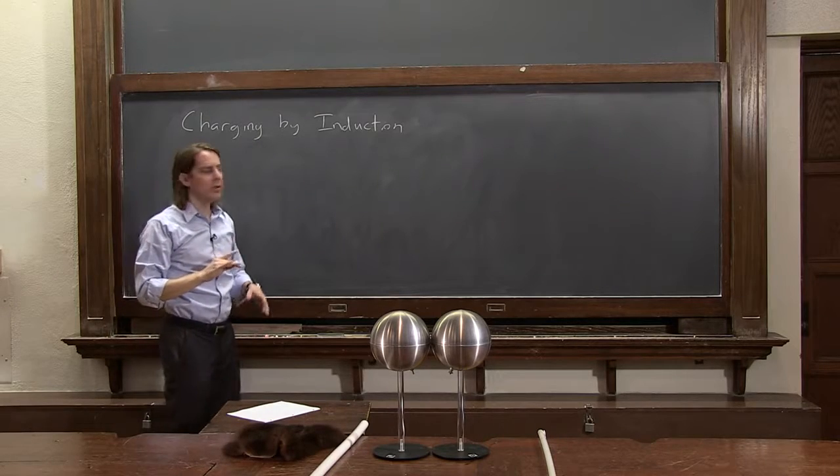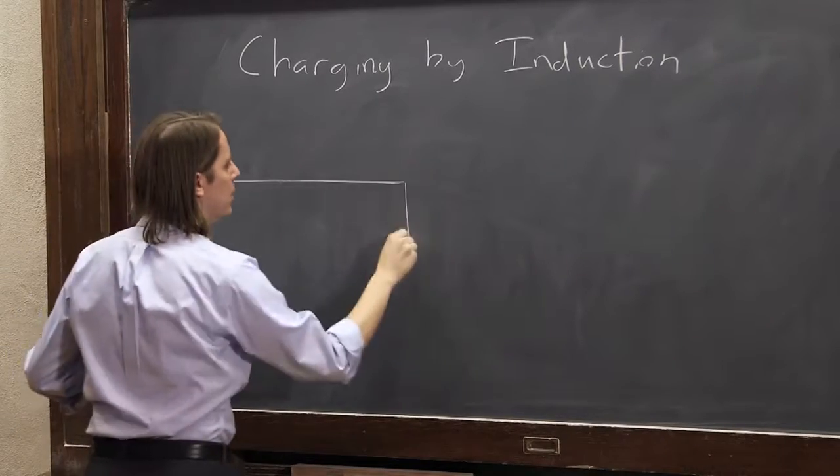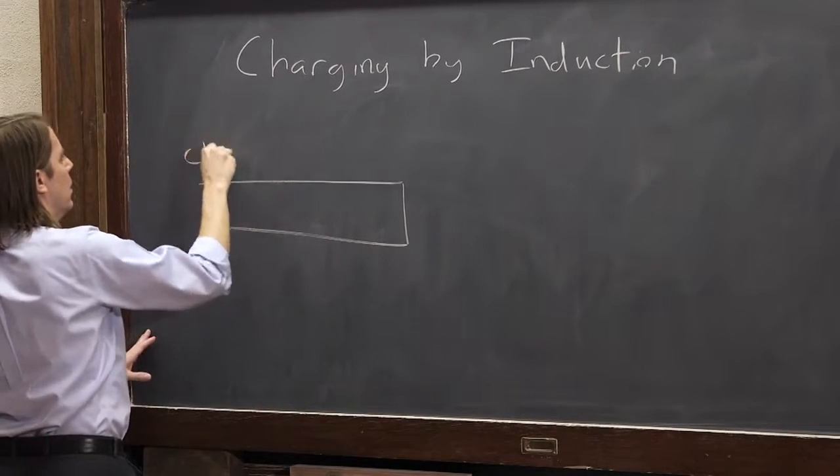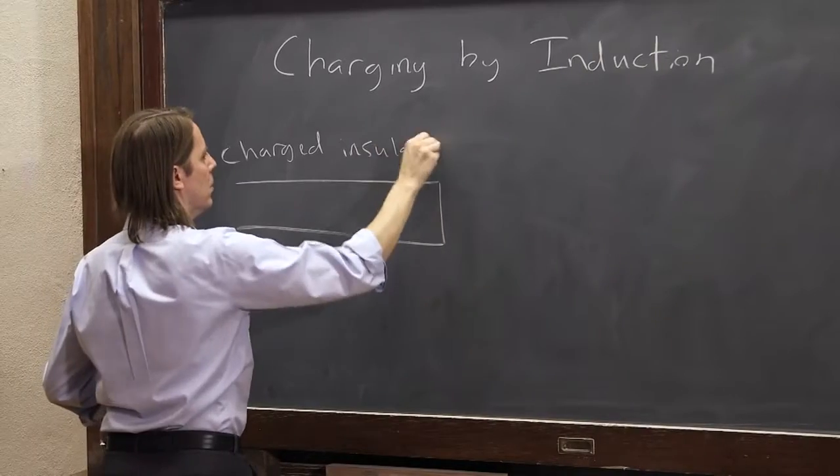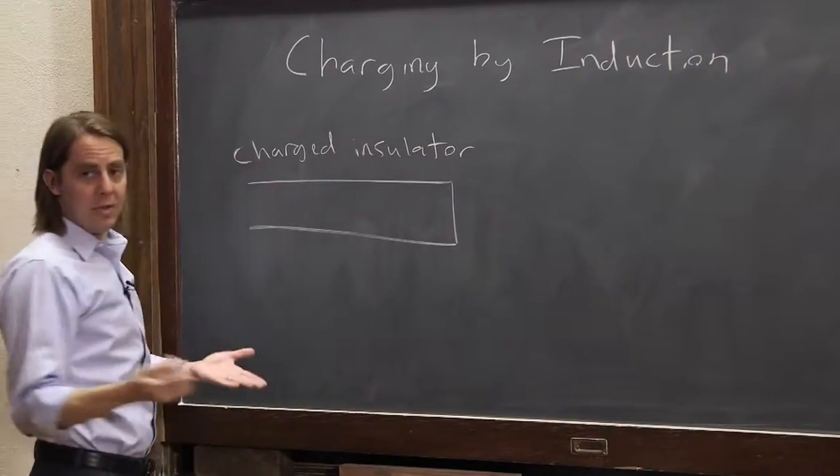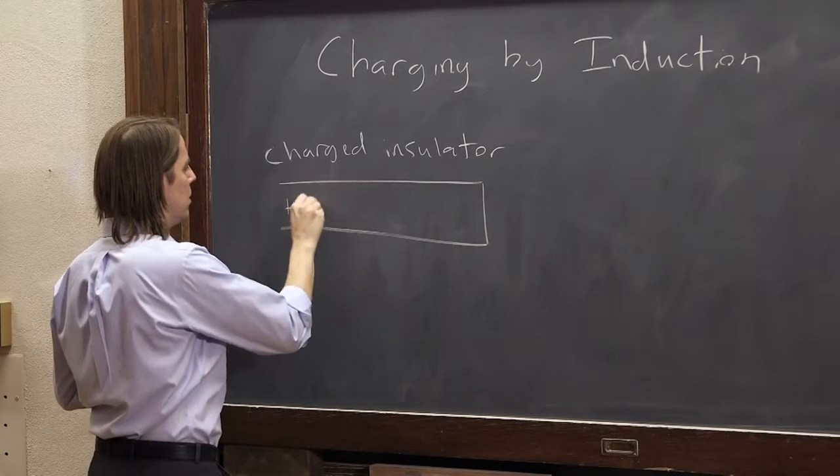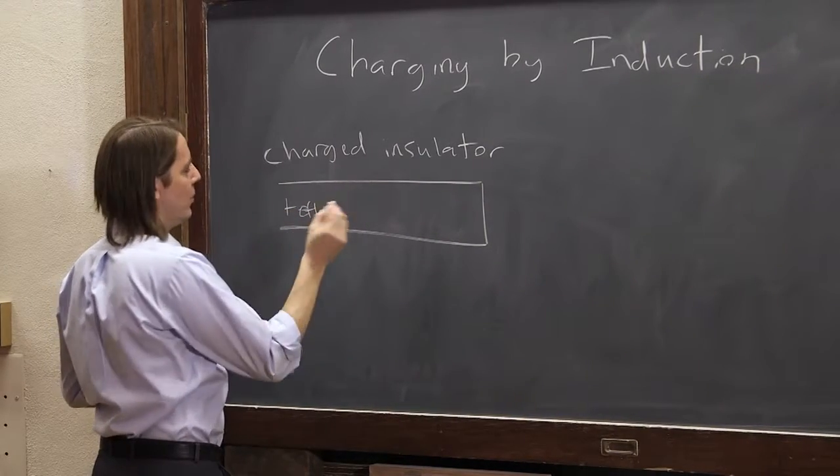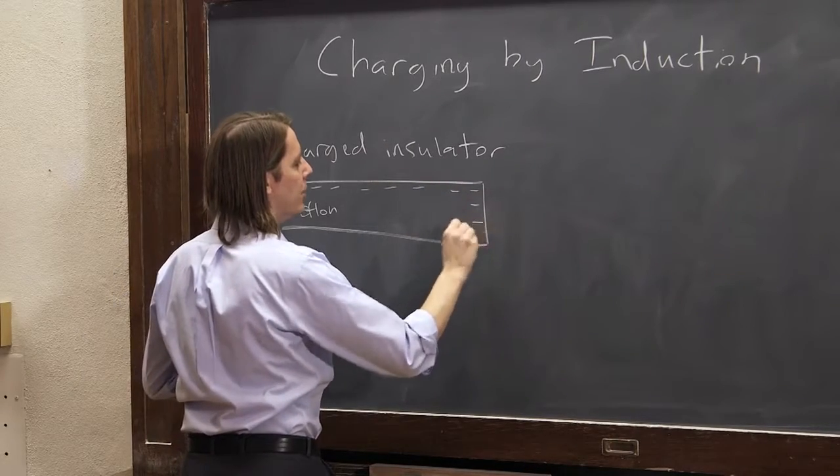This is something we can do now that we know we have two kinds of materials. So one material will be our charged insulator. It could be the Teflon rod. So we know if we take the Teflon rod and we rub it with the fur, we get negative charge on the surface.